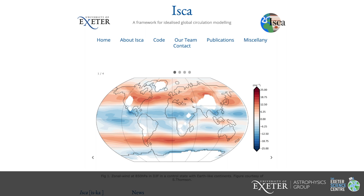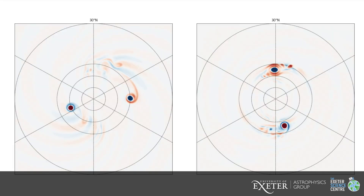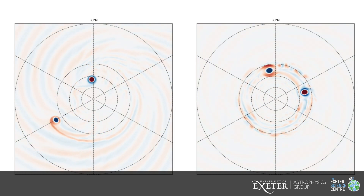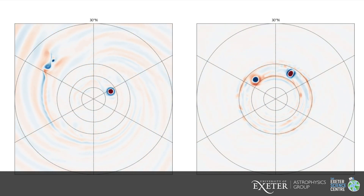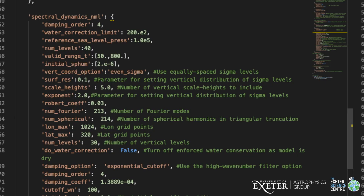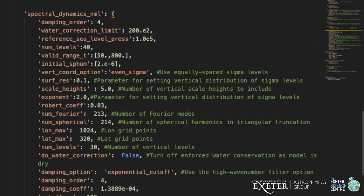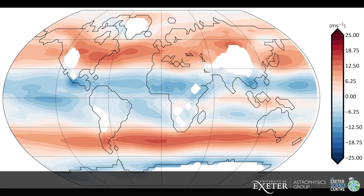I mainly study this by designing and running experiments with numerical models of atmospheres known as general circulation models, or GCMs for short. Using that code I can change different things about a planet — I can make it larger, spin it faster — and see how that changes its weather, jet streams, and storms. I can also apply a similar approach to climate science: I could look at how jet streams change under climate change by varying CO2 levels or aerosol levels and seeing how the dynamics change.